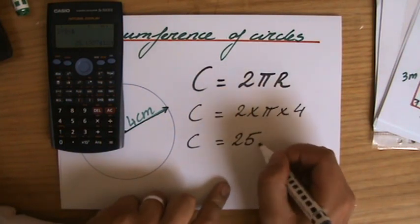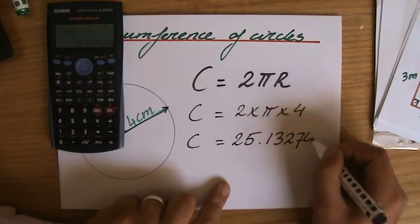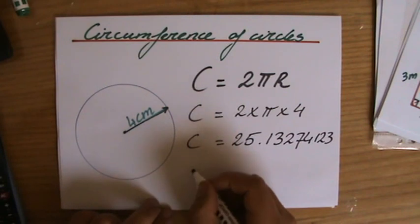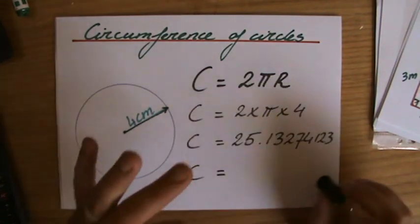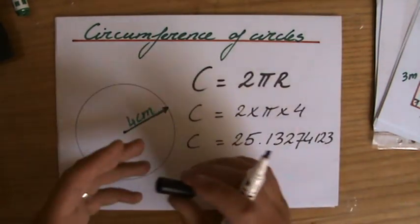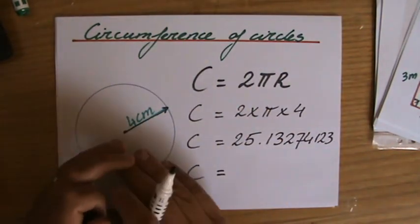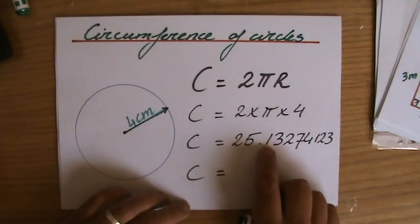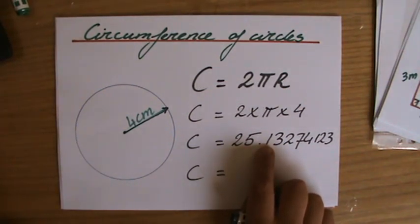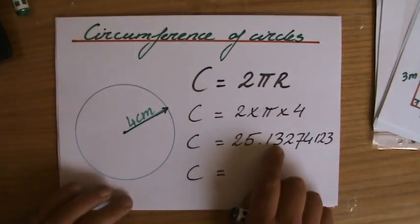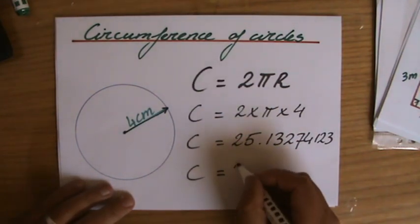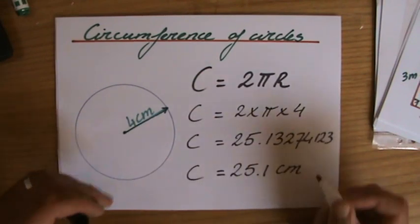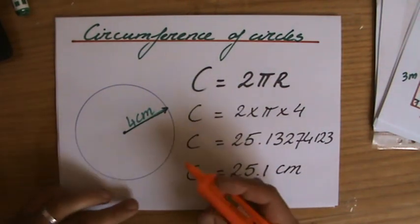It tells me it is 25.13274123. All answers which are not accurate we have to round to three significant figures, unless it's an angle. An angle you have to round to one decimal place, but this is not an angle. It is the circumference of a circle, so three significant figures: one, two, three. The one stays a one or goes up to a two. Those are your two options. That depends on the next number, and the one indeed stays a one. 25.1. The unit is a centimeter.